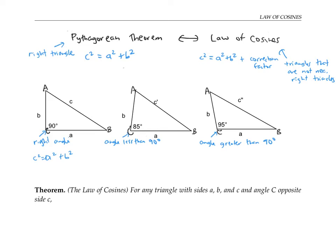But in the next triangle, the angle opposite to side c prime is a little bit less than a right angle, so this side c prime should be a little shorter. I'll write c prime squared is equal to a squared plus b squared minus a bit. In this third triangle, since the angle opposite to side c double prime is a little bit bigger than 90 degrees, this side length should be a little bit bigger than a squared plus b squared, so I'll write it as a squared plus b squared plus a little bit.